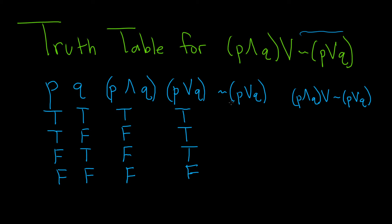For the negation of P or Q, all you have to do is look at the column for P or Q and then just switch the truth value. So here it's true, so it becomes false. Here it's true, so it becomes false. Here it's true, so it becomes false. Here it's false, so it becomes true.